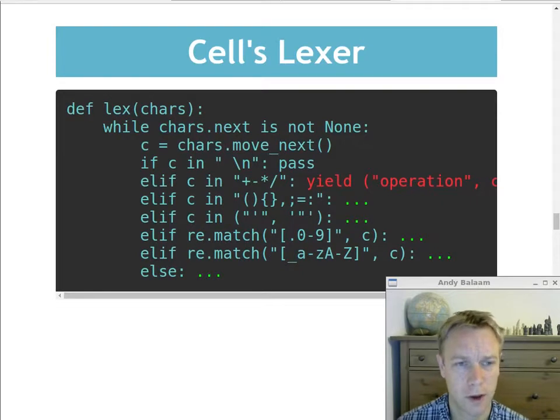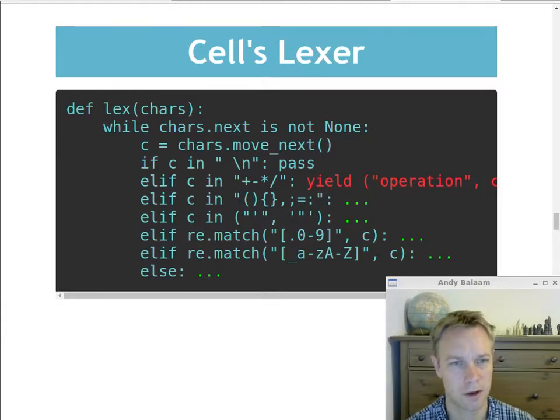Its type is operation and its contents is just this one character C. And we're just kind of throwing that out to say this is the next thing in your iteration. So that deals with all the arithmetic operations. If we find a plus minus times or divide sign, we immediately say, this is a token we know about. So if we found another plus immediately after the first plus, well then there'll just be two tokens, plus and then plus, which doesn't make sense in the language, but it's fine from the point of view of the lexer.